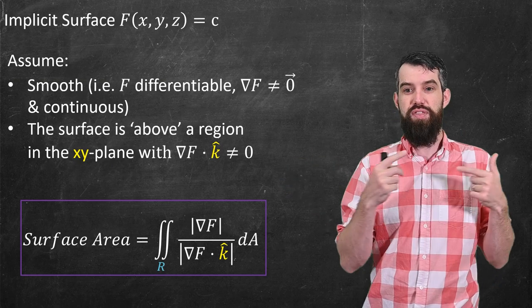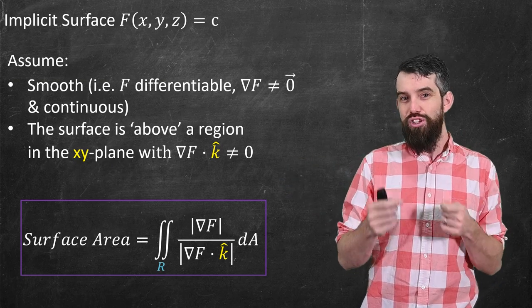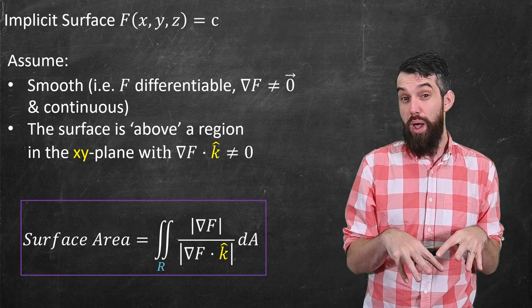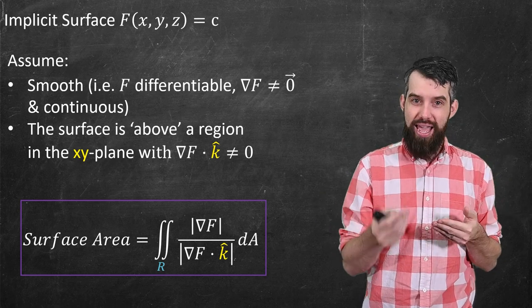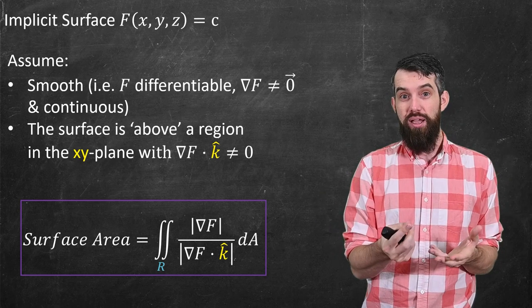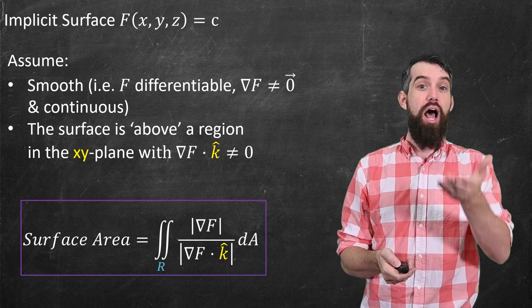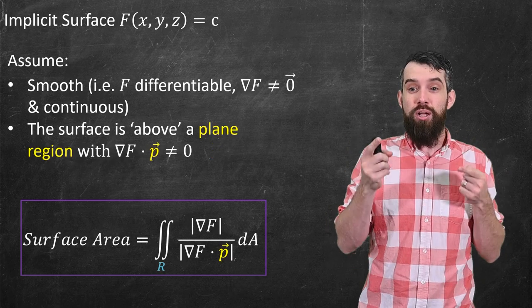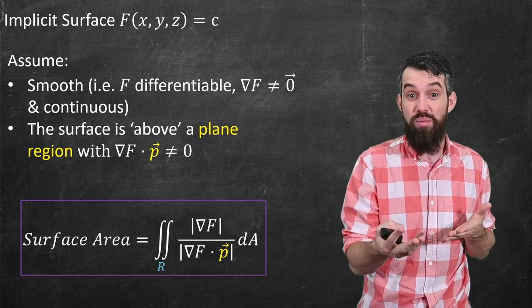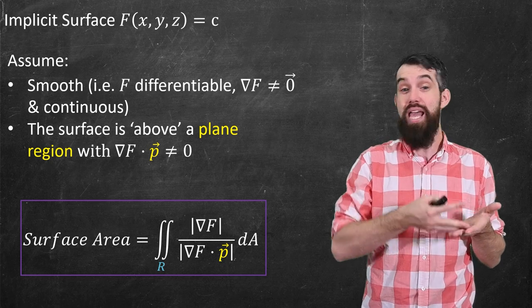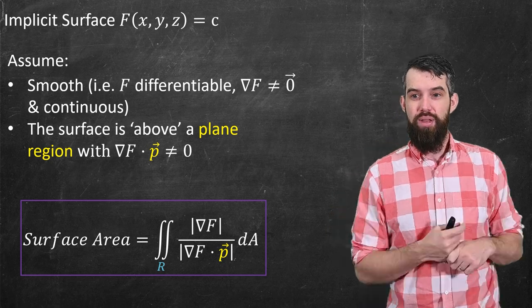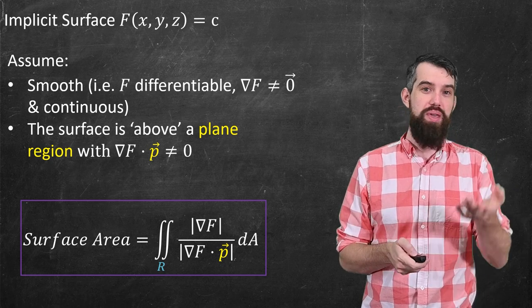Okay so returning back to our statement with the assumptions, the actual assumption that it was over a region in the xy plane, and that we were dotting it with k hat, was actually a little bit arbitrary. In fact I could replace this with a generic plane, which could be the yz plane, could be the xy plane, could be the xz plane, it doesn't matter.